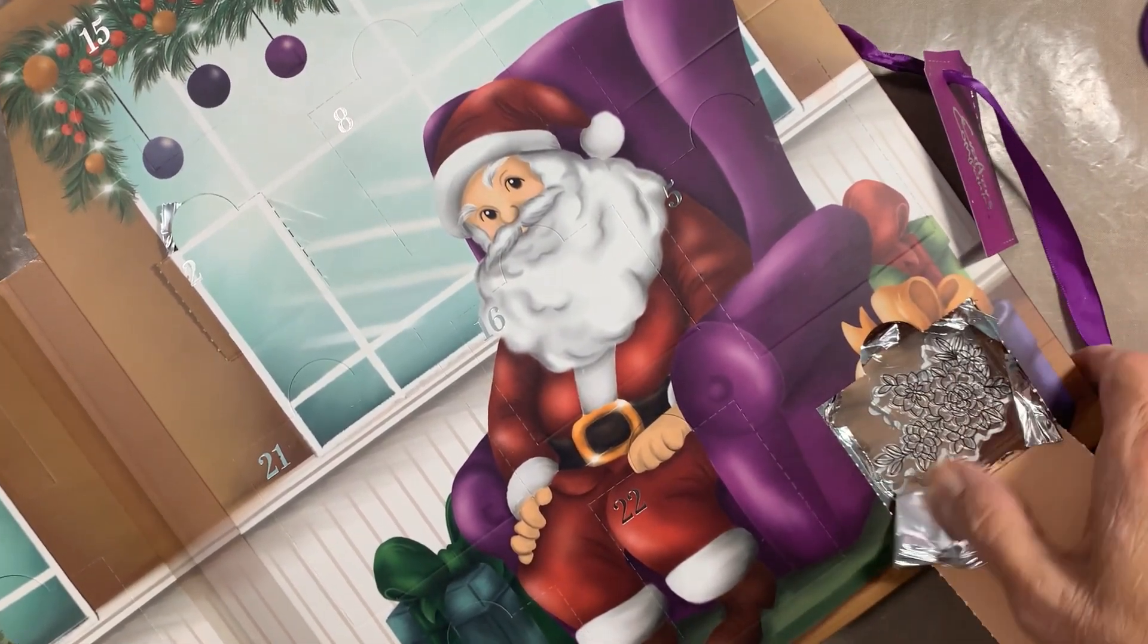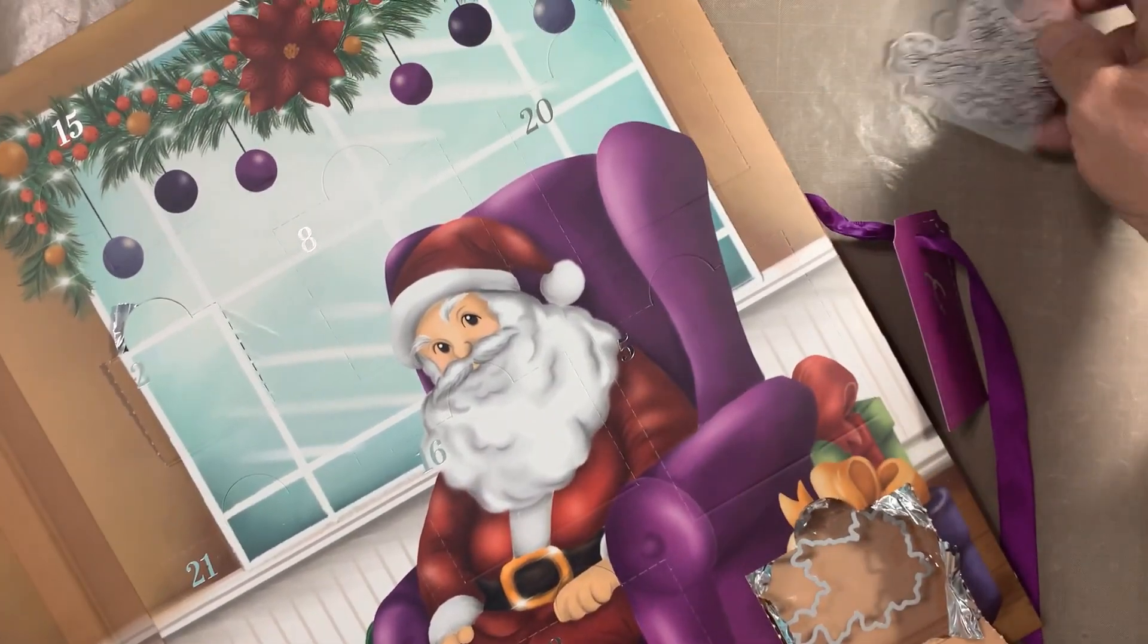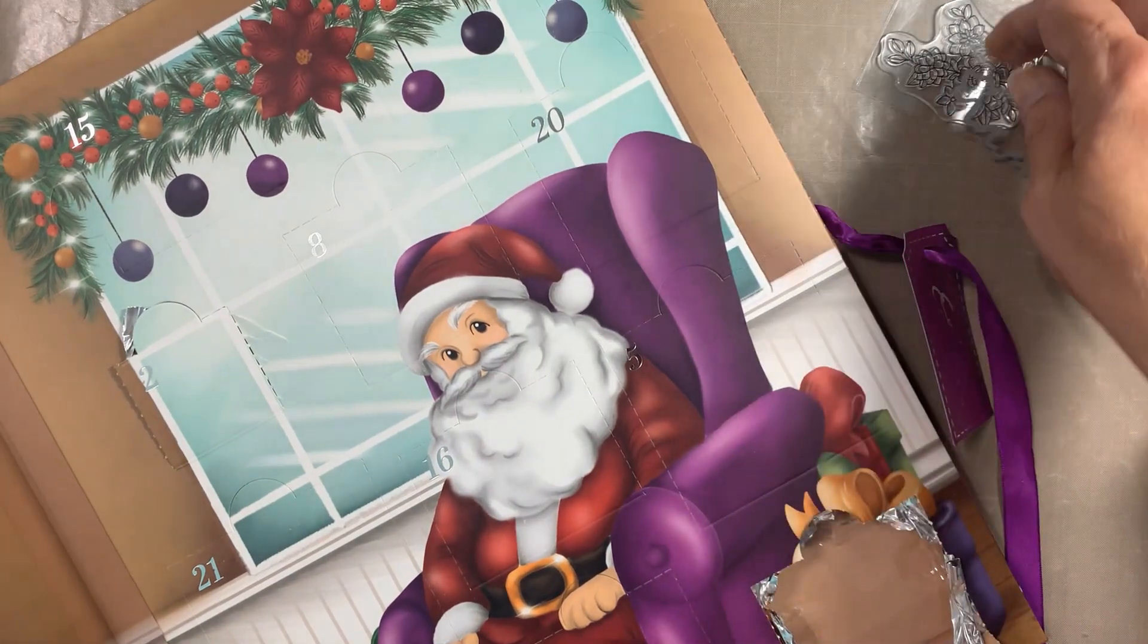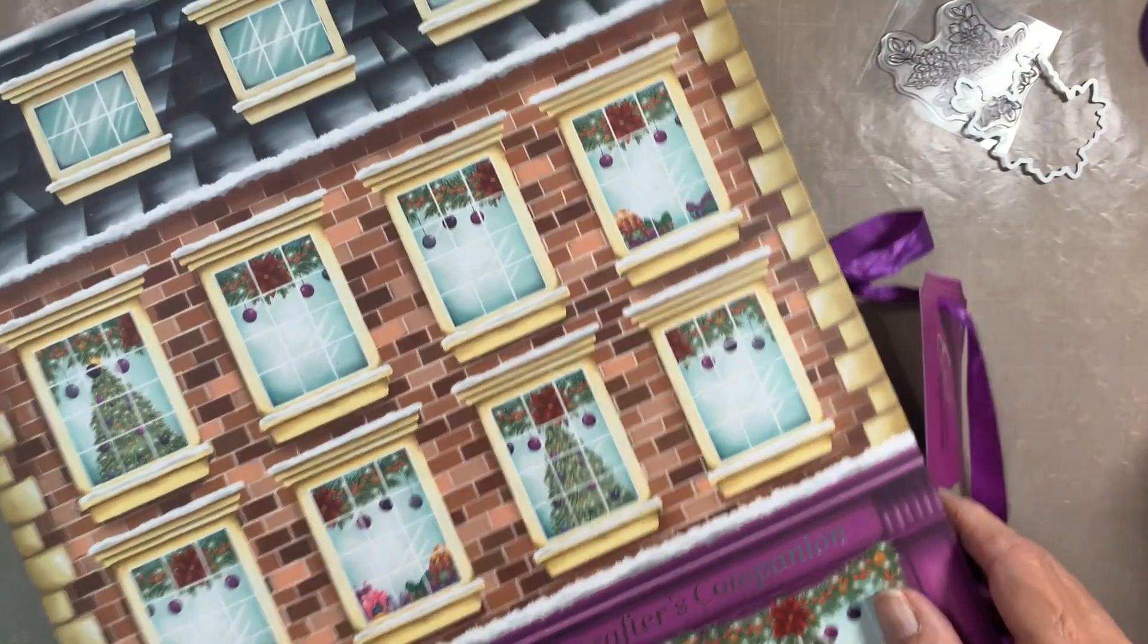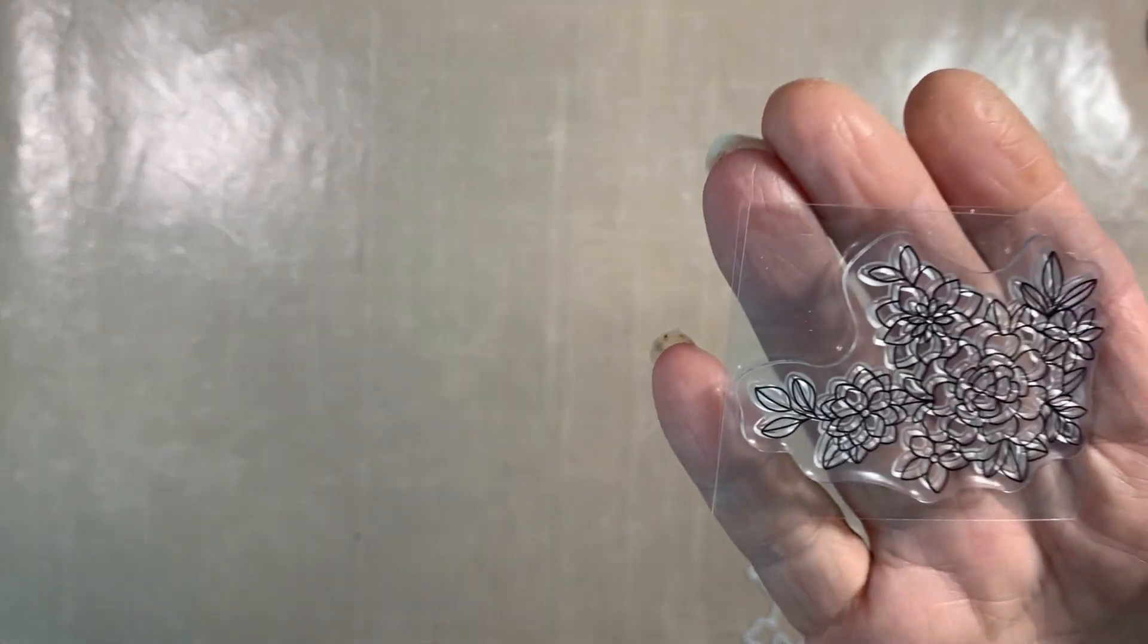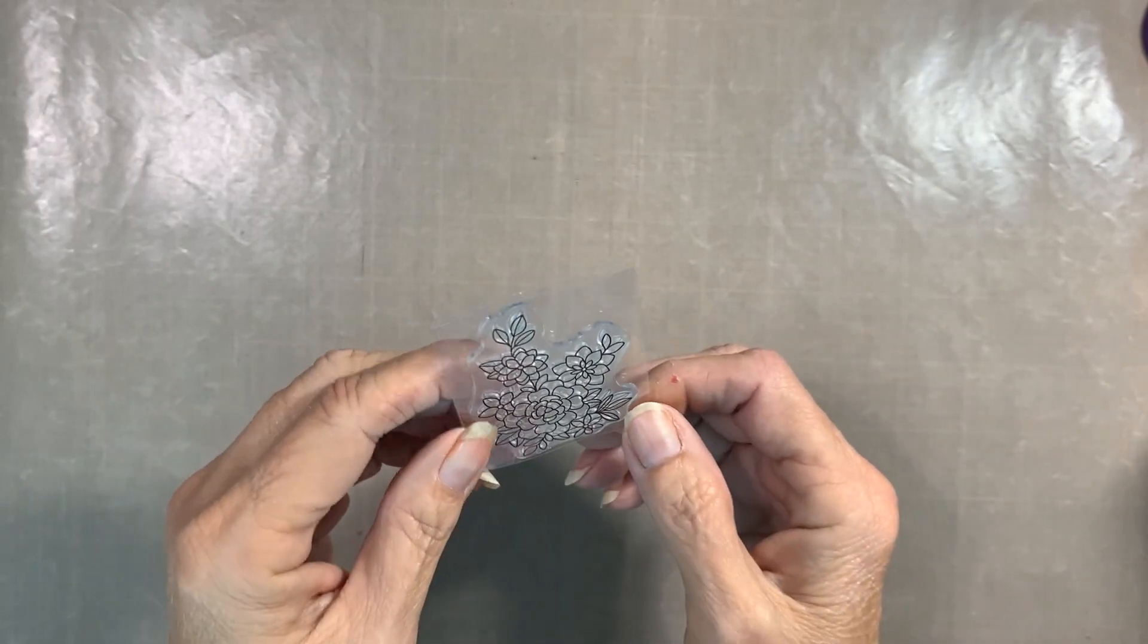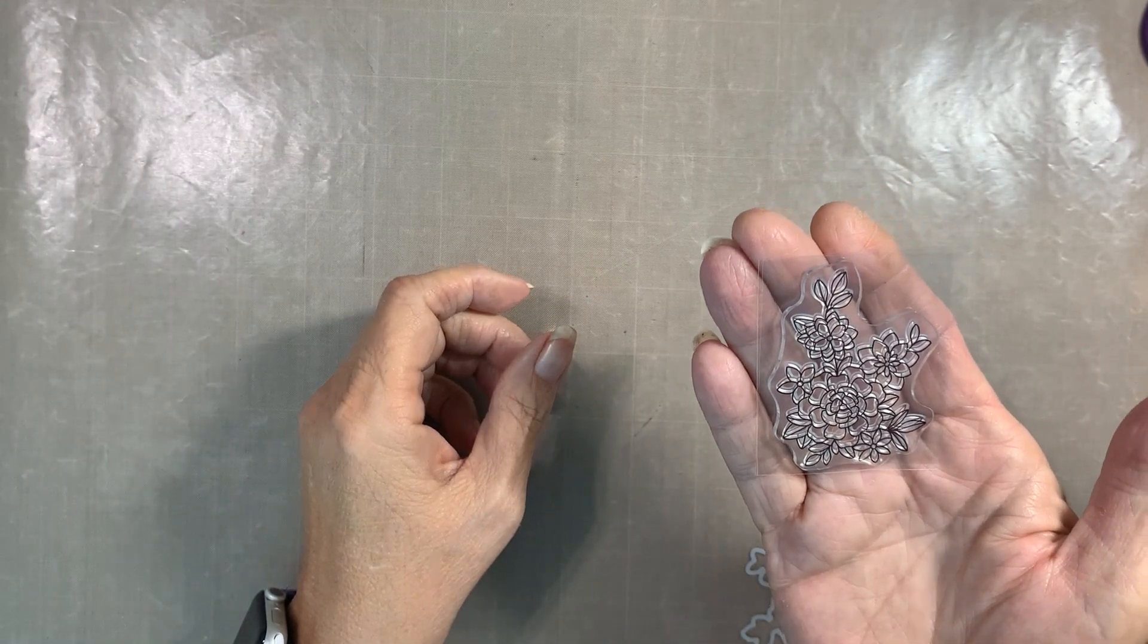That looks like another stamp and die set. But look, it doesn't look winter. So that's good. Oh, it's cute. It's a little bouquet. Hold on. Let me get this out of the way. This is cute. A little tiny. This would be cute in the corner.